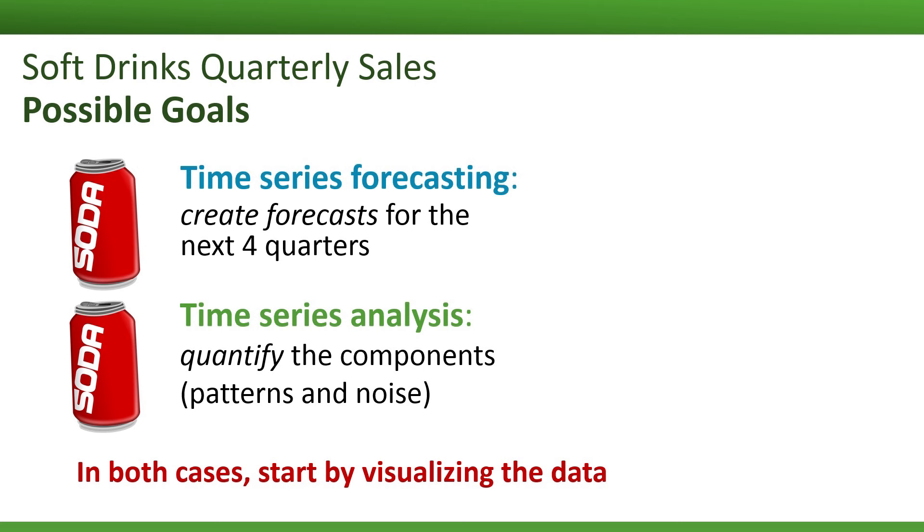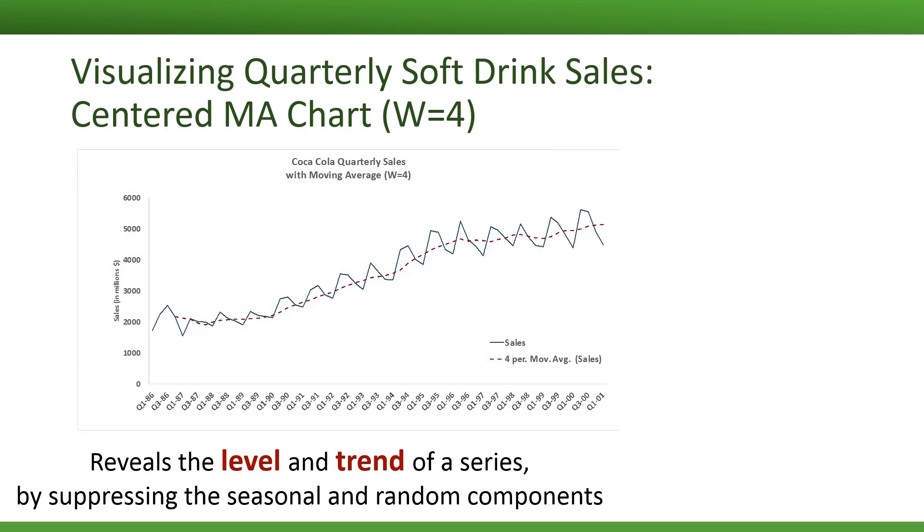Let's start by visualizing the data using a moving average chart. Here is a moving average chart for these data. The smooth line here is that moving average line. And you can see that compared to the data that have seasonal behavior, the smooth line very nicely shows us the trend throughout this period. What the moving average chart does for us is it reveals the level and trend of the series by suppressing seasonal and random or noise components in this series.